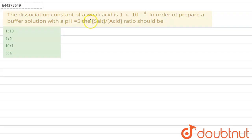Hello everyone. In this question, we have to find out the ratio of salt to acid. The ratio of the dissociation constant for weak acid is given as 1 into 10 to power minus 4, and pH for this mixture is given as 5.